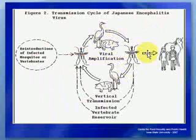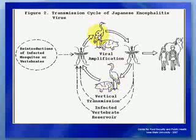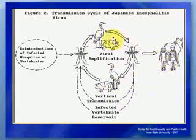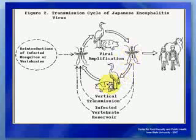The basic cycles of transmission are pig to mosquito to pig, and wading bird to mosquito to wading bird. The disease is transmitted to man by the bite of mosquitoes. Man is an incidental dead-end host and man-to-man transmission has not been recorded. Among animal hosts, pigs have been incriminated as the major vertebrate host. In some places, up to 100% of pigs may be infected. Infected pigs do not manifest any outward symptoms but circulate the virus, making them amplifiers of the virus.